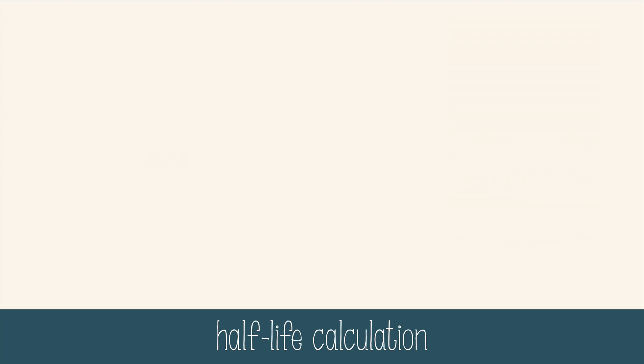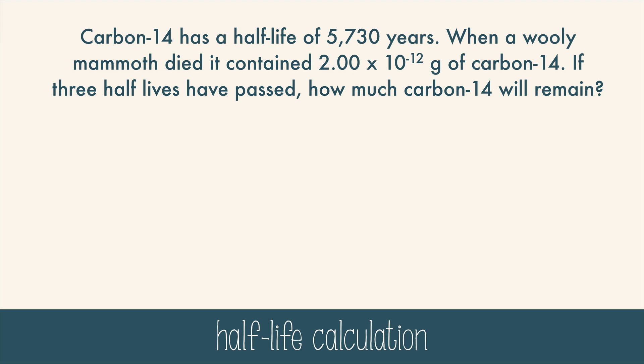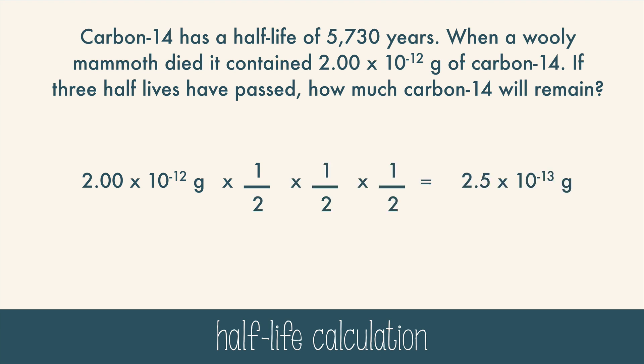Let's try a sample calculation using half-life. Carbon-14 has a half-life of 5,730 years. When a woolly mammoth died, it contained 2.00 × 10⁻¹² grams of carbon-14. If three half-lives have passed, that would be 17,190 years — a very old, dead woolly mammoth. We figure out how much carbon-14 remains by multiplying 2.0 × 10⁻¹² grams by one-half three times. The answer is 2.5 × 10⁻¹³ grams.